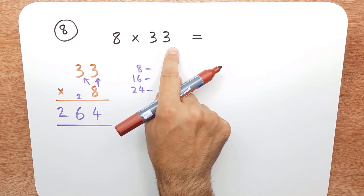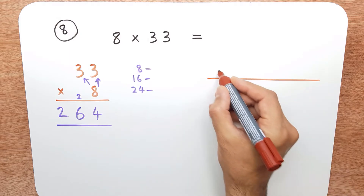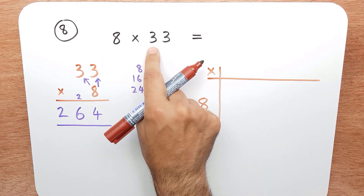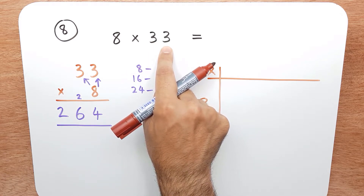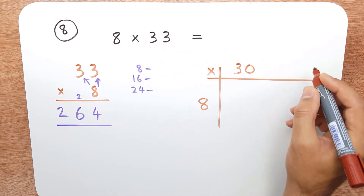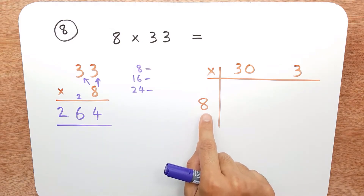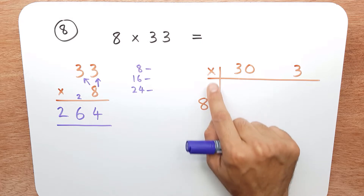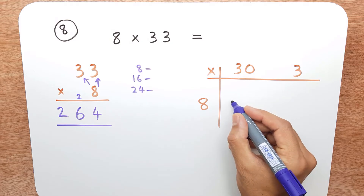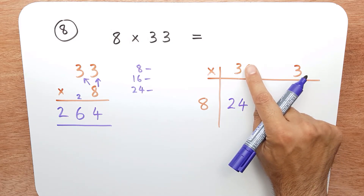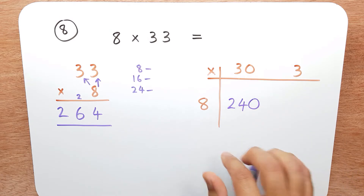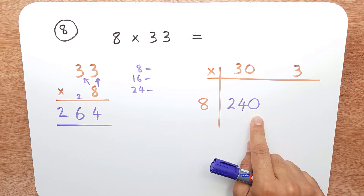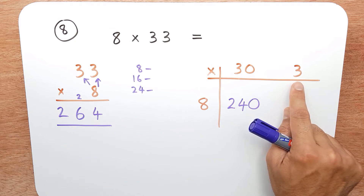Now what I want to do is do this calculation using the grid method. I'm going to write the eight here and split thirty-three up into thirty and three — partition it: thirty and three. So I'm going to do eight times thirty: I hide the zero and do eight times three, which is twenty-four. Now I bring the zero back, so eight times thirty is two hundred and forty. Then eight times three is twenty-four.